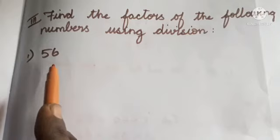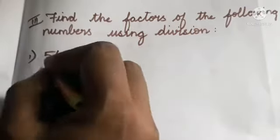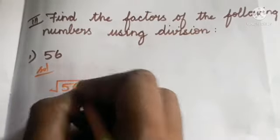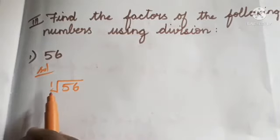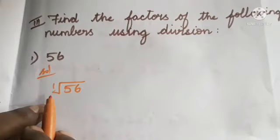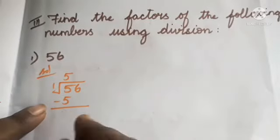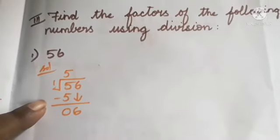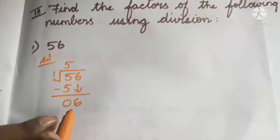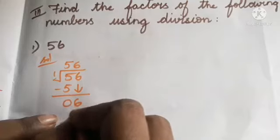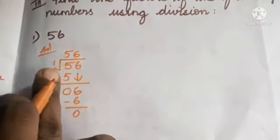First question: we want to find the factors of 56. We start by dividing 56 by 1. The dividend is 56 and the divisor starts at 1. In the tens place, 5 divided by 1 gives 5; 5 minus 5 is 0. Bring down 6; 6 ones are 6, so quotient is 56. The remainder is 0, so 1 and 56 are factors of 56.